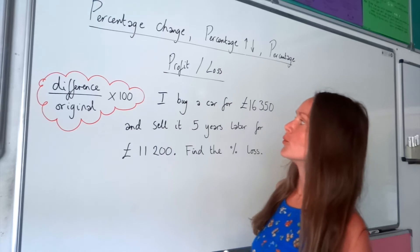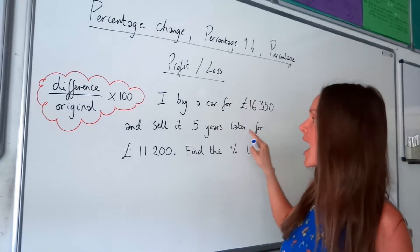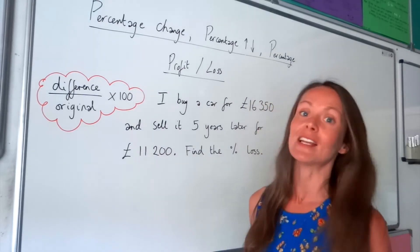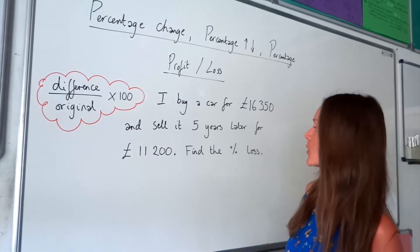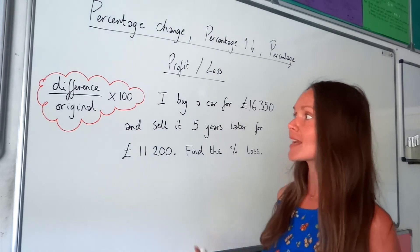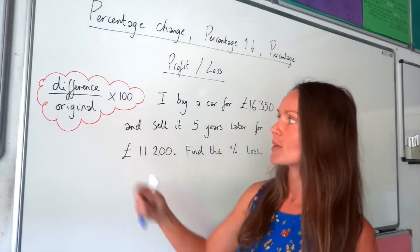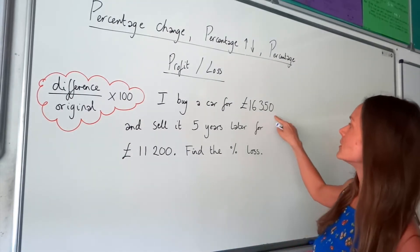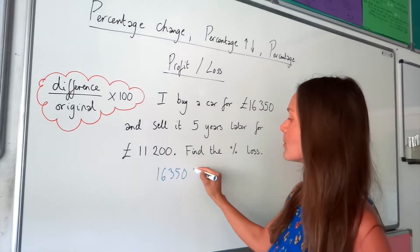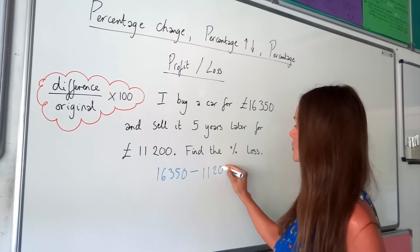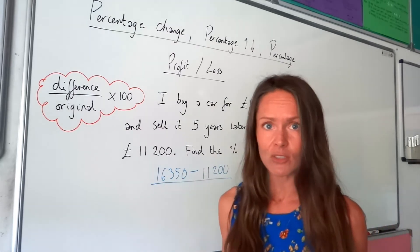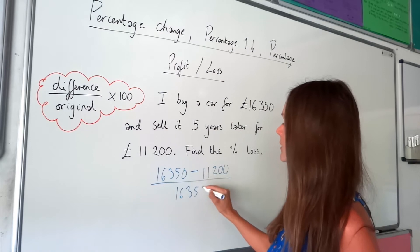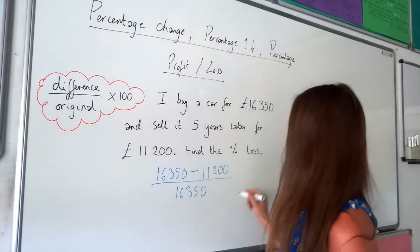So in this example, I buy a car for £16,350, and I sell it five years later for £11,200. So like most cars, it depreciates — it loses value over time — so we have to work out the percentage loss. It's exactly the same formula as for the previous question. So we have to work out the difference between these two values. Take the larger one, £16,350, and minus the smaller value, £11,200, not forgetting to divide by the original value — that's the value that I bought the car at, so £16,350 — and then multiply by 100 to turn it into a percentage.